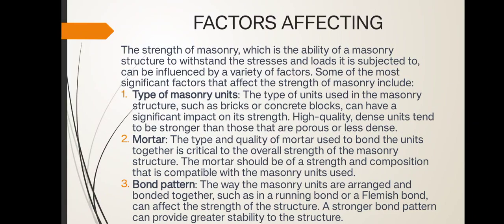Factors affecting the strength of masonry: The ability of a masonry structure to withstand stresses and loads can be influenced by a variety of factors. Types of masonry units: The type of unit used in a masonry structure, such as bricks or concrete blocks, can have a significant impact on its strength. High quality, dense units tend to be stronger than those that are porous or less dense. Mortar: The type and quality of mortar used to bond the units together is critical to the overall strength of a masonry structure.